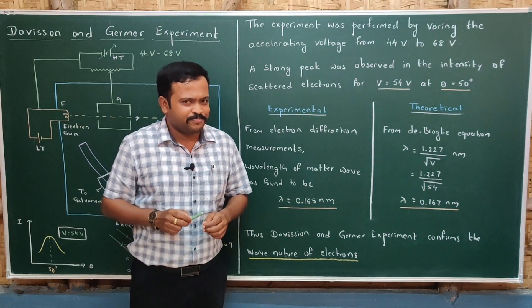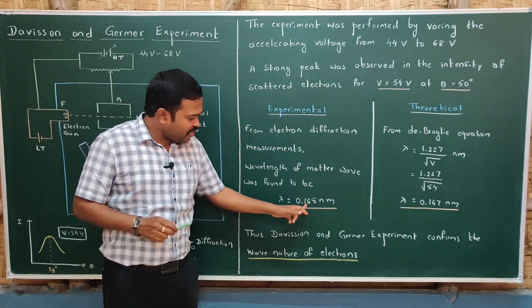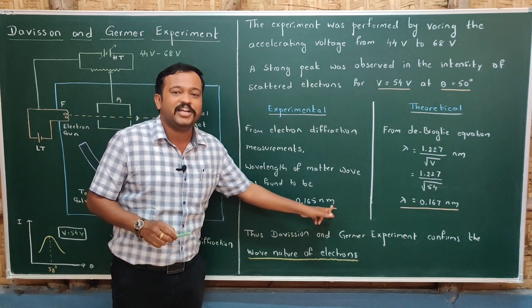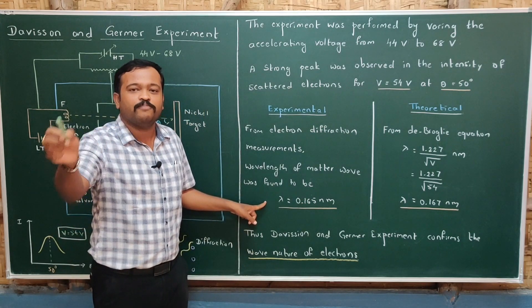From electron diffraction measurements, the wavelength of matter waves was found to be 0.165 nanometer. So this is the experimental value of wavelength of matter wave.